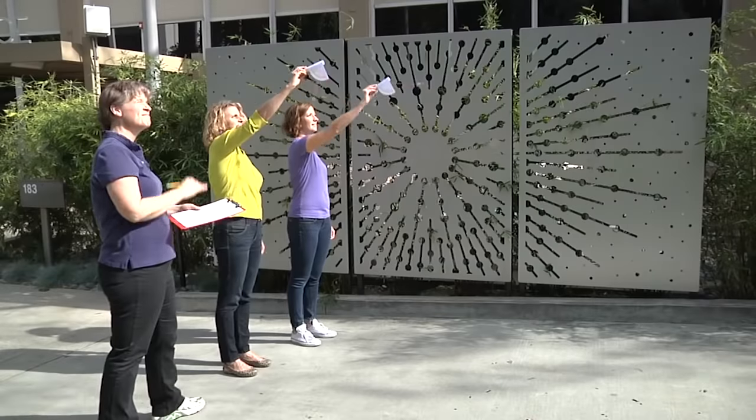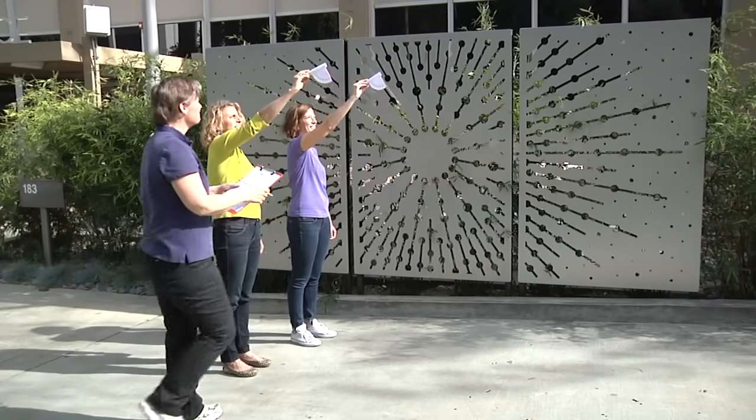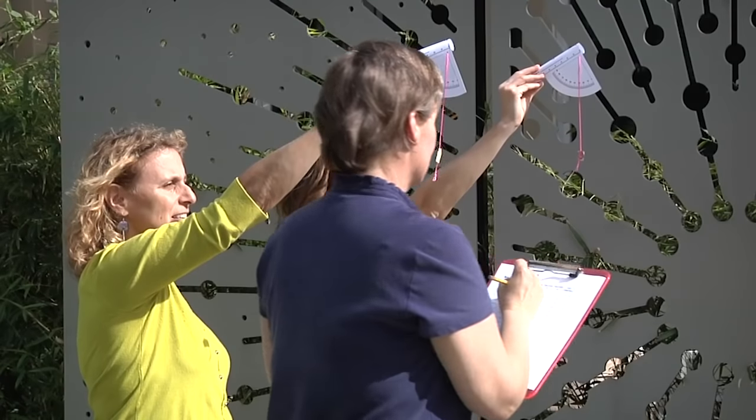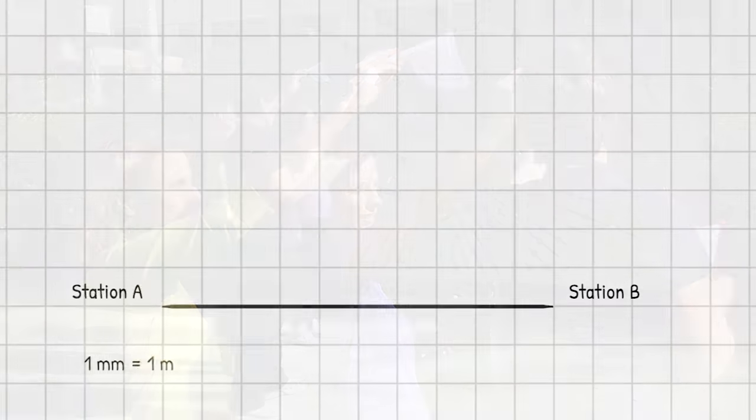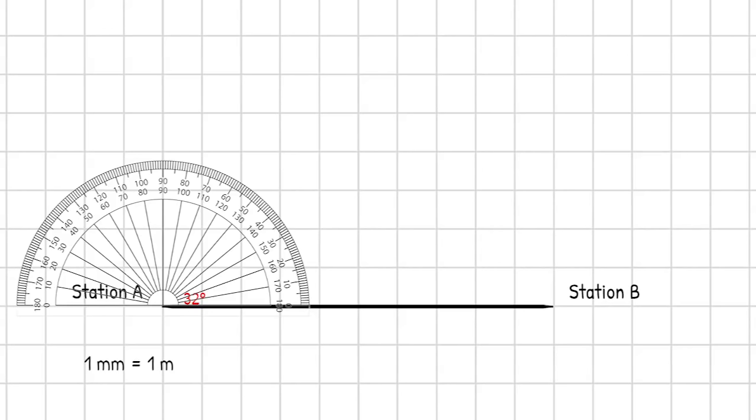I'm going to say one millimeter is equal to one meter. So if it was a hundred meters long on our baseline, it'll be a 10 centimeter line on our model. Now I'm going to construct my angles. We had tracking station A and tracking station B. I look on the log sheet and I see that tracking station A, the average angle of inclination was 32 degrees. So I'm going to construct the angle, 32 degrees, and draw the line from tracking station A through that angle, 32 degrees.